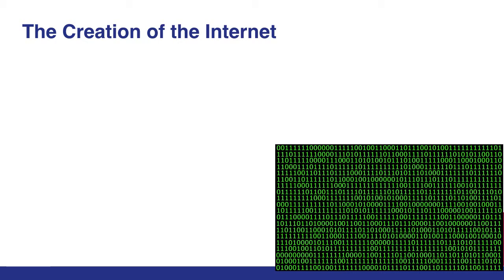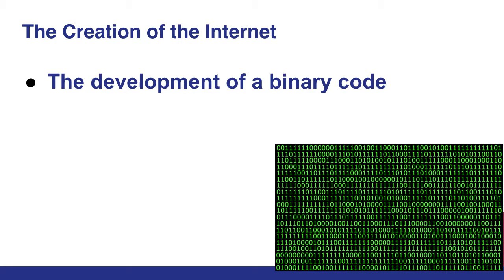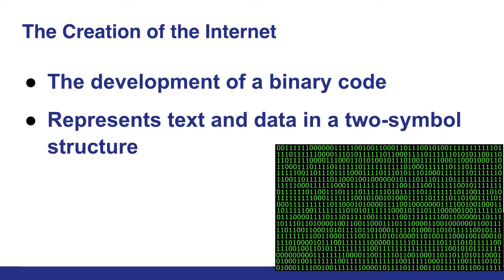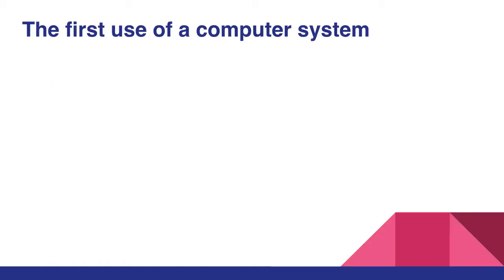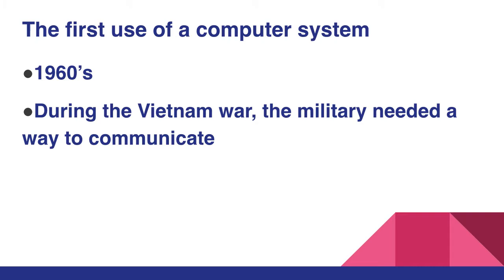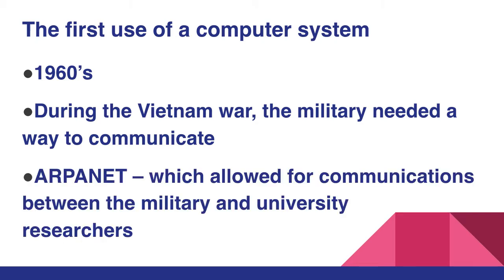The creation of the Internet began with the development of a binary code that represents text and data in a two-symbol structure. Binary code assigns a pattern to each character. The first use of a computer system was in the 1960s. During the Vietnam War, the military needed a way to communicate, and out of that need came the ARPANET, which allowed for communications between the military and university researchers.